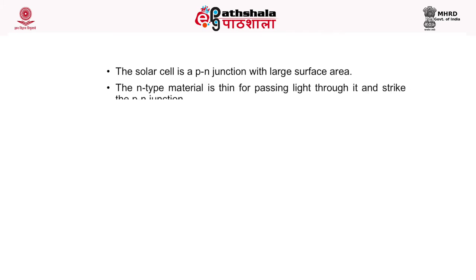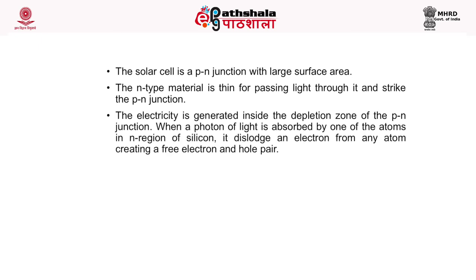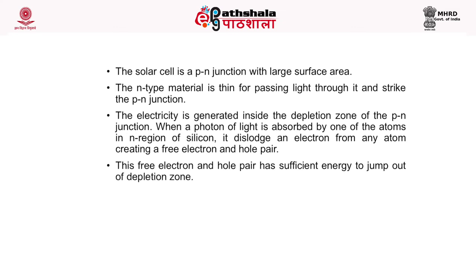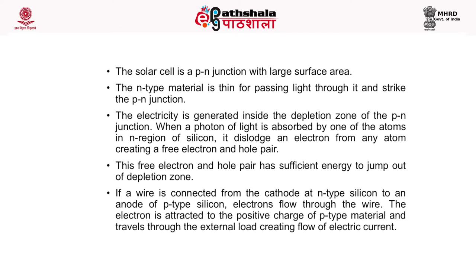The solar cell is a p-n junction with a large surface area. The n-type material is thin for passing light through it to strike the p-n junction. Electricity is generated inside the depletion zone. When a photon is absorbed by an atom in the n-region of silicon, it dislodges an electron, creating a free electron and hole pair with sufficient energy to jump out of the depletion zone. If a wire is connected from the cathode at n-type silicon to the anode of p-type silicon, electrons flow through the wire, creating electric current.